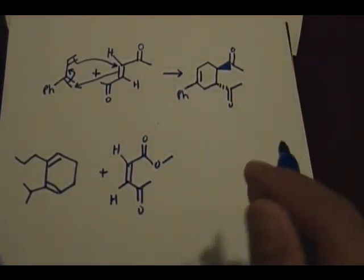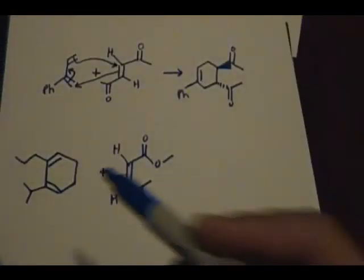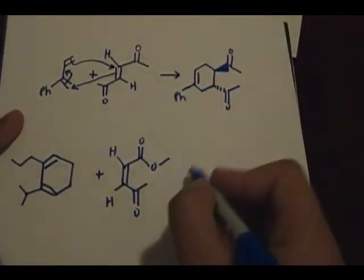So again, now this is going to form the variation, this type of product, because again the diene is in a cyclic ring. The diene is in a cyclic ring, so it's going to form that variation.